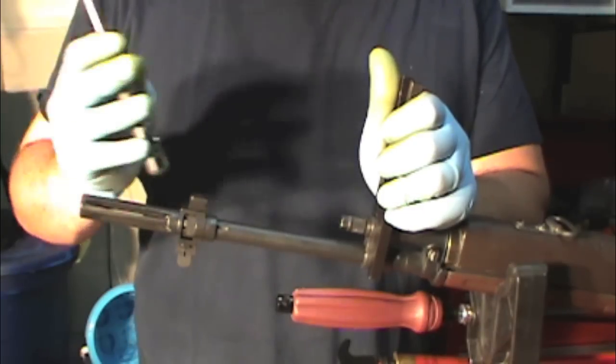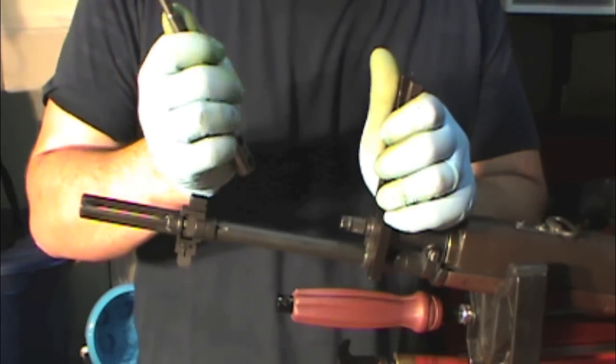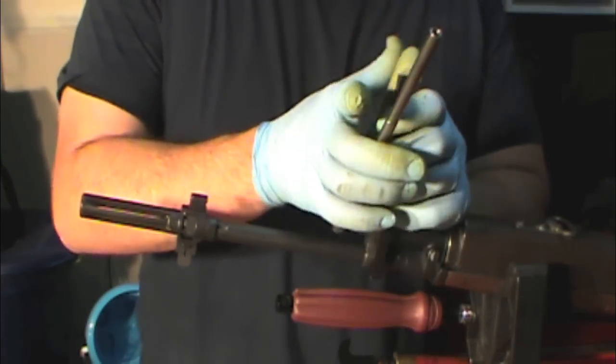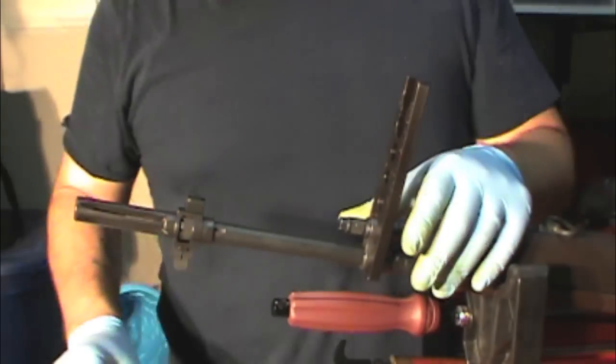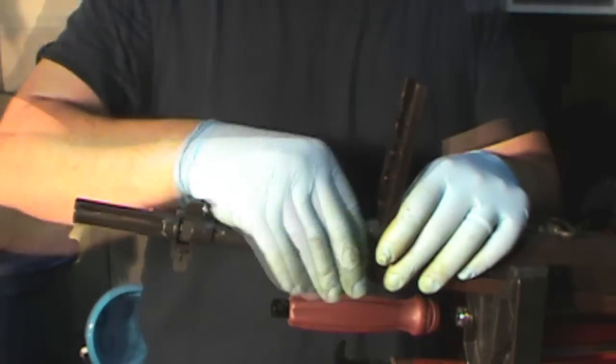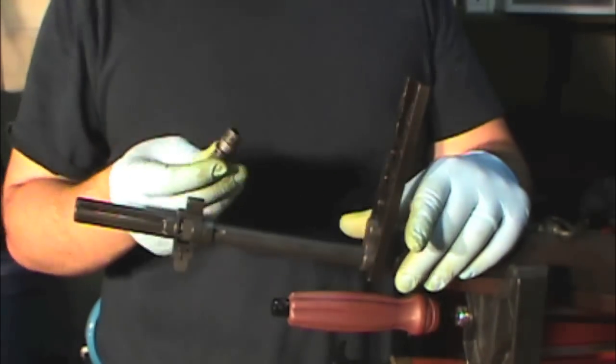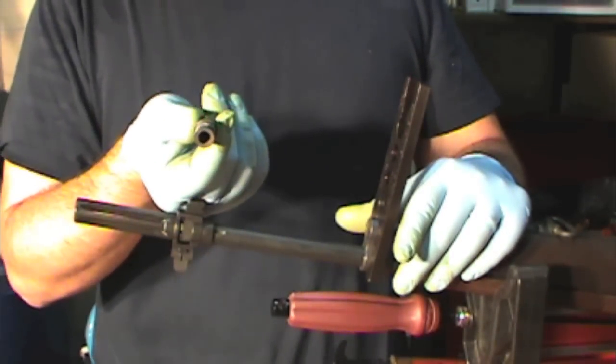And you're going to grab either a 3/8 box-end wrench, a GI tool, multi-tool, or a BAD-T1. And you're going to break the torque on your gas plug. I'm going to take the gas plug out, and you're going to see it's full of carbon.